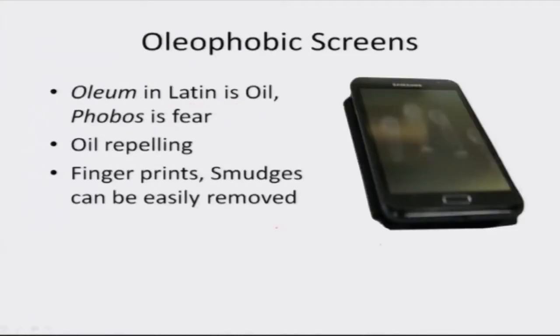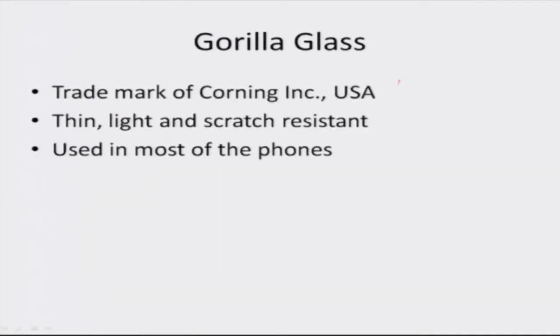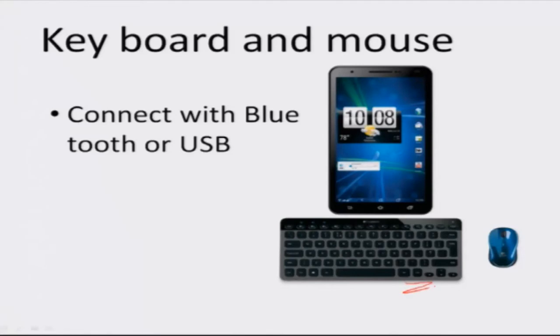These phones are supposed to be oleophobic. An oleophobic screen basically means it doesn't smudge — it repels oil. If you have fingerprints on the phone, you just wipe it off and it goes away. Oleum is Latin for oil and phobos means repelling, so oil doesn't stick. The screen is made of what is called gorilla glass, which is very powerful, thin, and strong — used in most phones. You can also connect keyboards or a mouse via Bluetooth to interact with the phone.